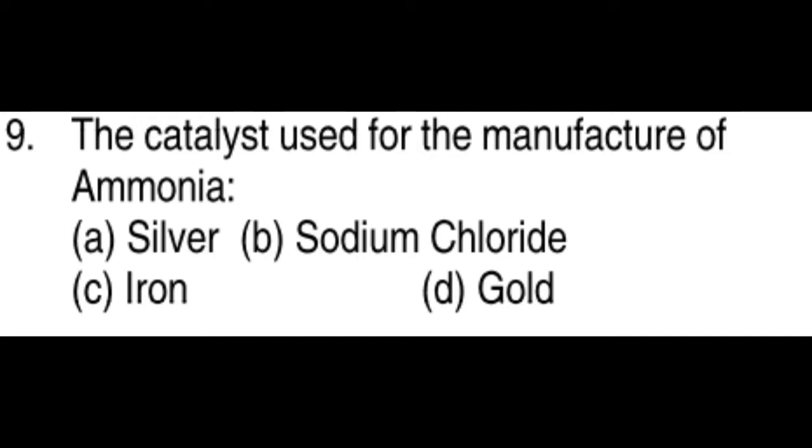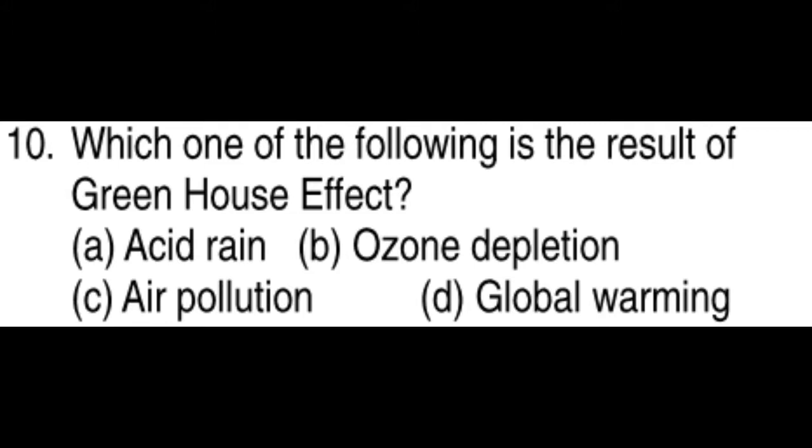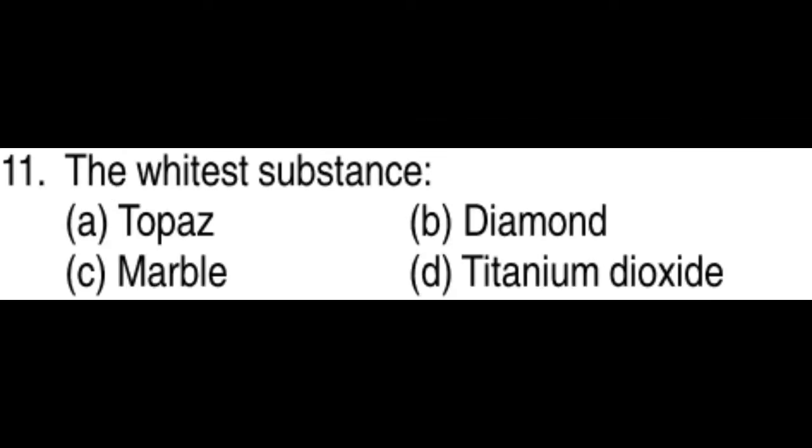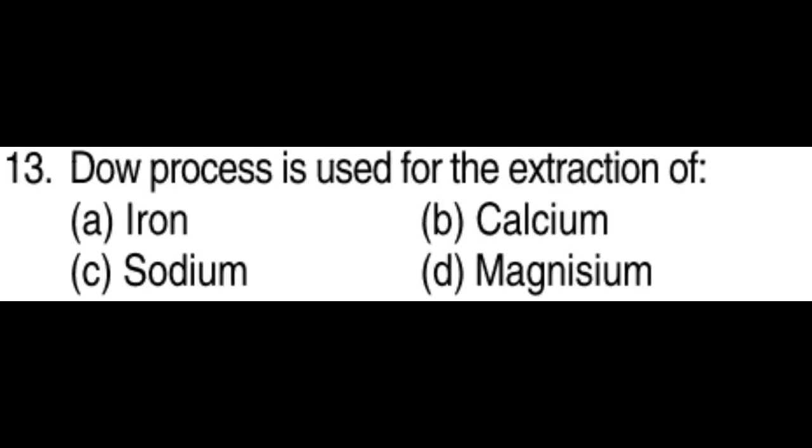Iron. Which one of the following is a result of greenhouse effect: Global warming. The whitest substance: Titanium dioxide. Dow process is used in the extraction of Magnesium.